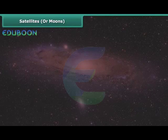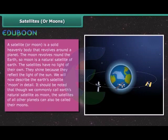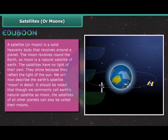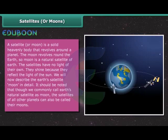Satellites or Moons. A satellite or moon is a solid heavenly body that revolves around a planet. The moon revolves around the Earth so moon is a natural satellite of Earth. The satellites have no light of their own. They shine because they reflect the light of the Sun. We will now describe the Earth's satellite moon in detail. It should be noted that though we commonly call Earth's natural satellite as moon, the satellites of all other planets can also be called their moons.